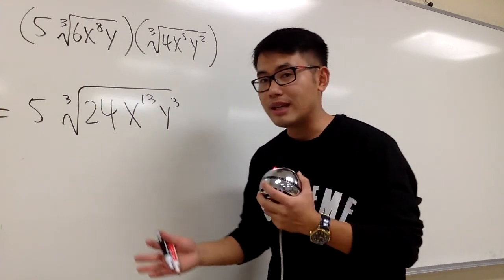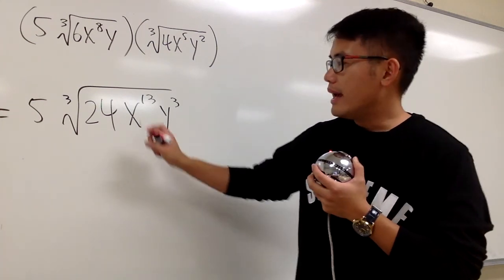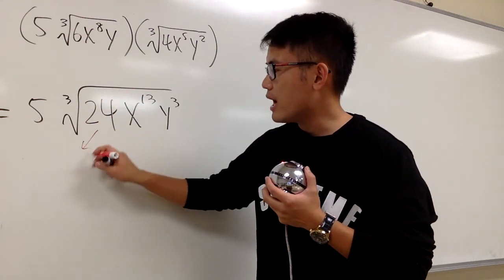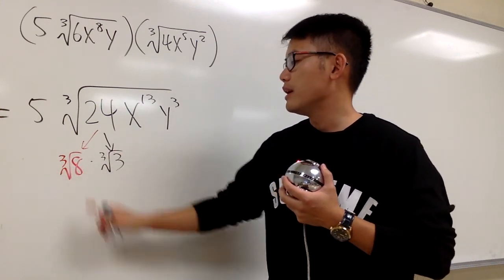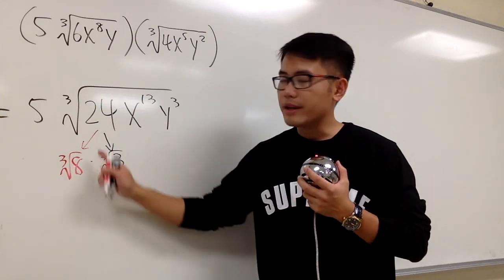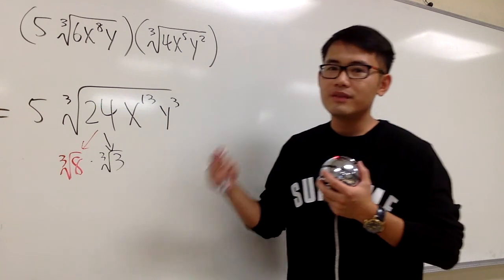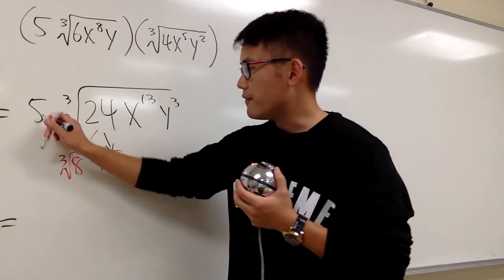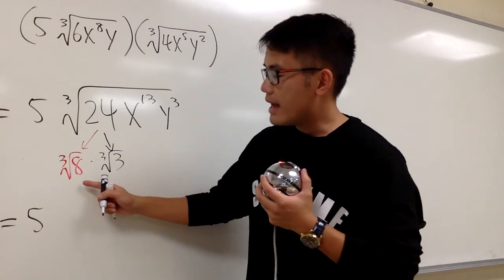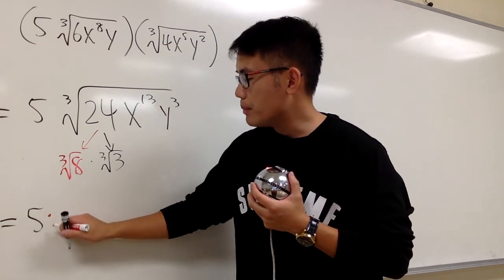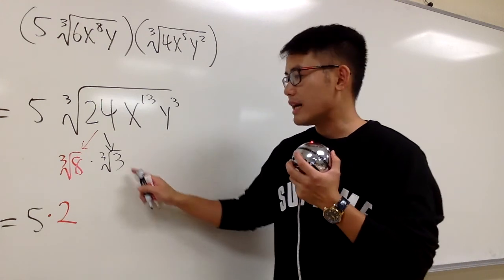We know 2 times 12, but 2 is not a perfect cube, 12 is not a perfect cube. But we know 8 times 3 is 24, and 8 is actually a perfect cube. Let me break it down as cube root of 8 times cube root of 3. You should write down the perfect cube first, because this is going to be a nice number, 2. The cube root of 8 is 2. The 5 stays in the front. This 3 is still inside of the cube root.